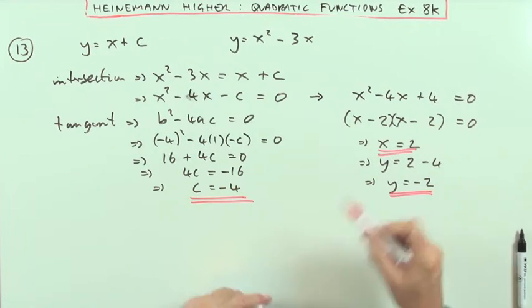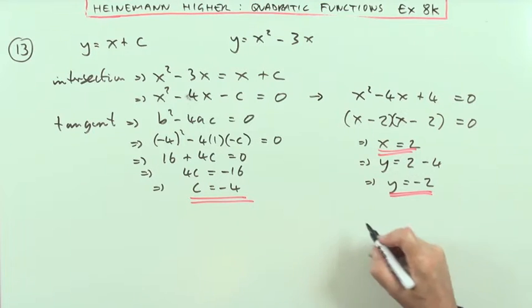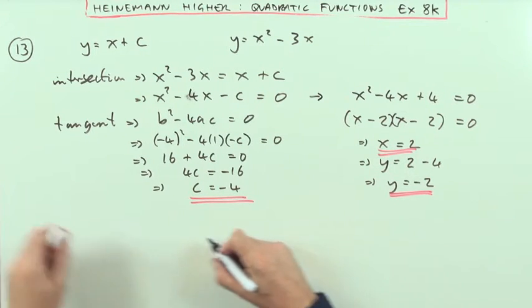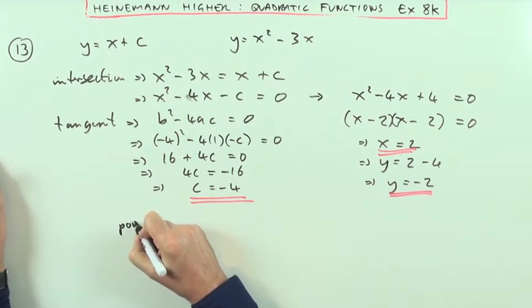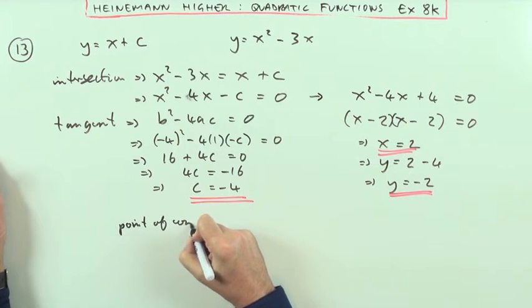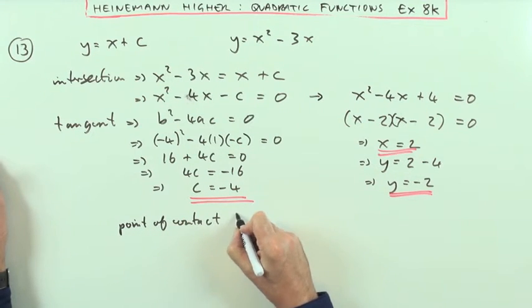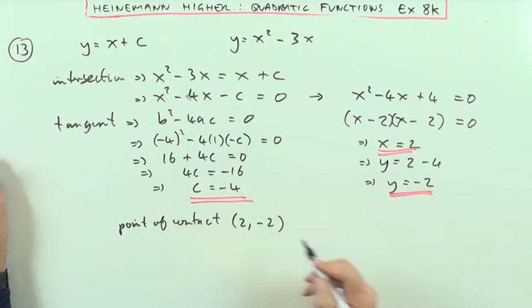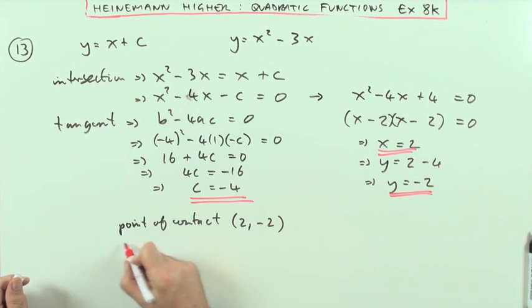I should have underlined that. So I better specify the point of contact. So c is negative 4, so the point of contact or the point of tangency is 2, negative 2 and that would be it.